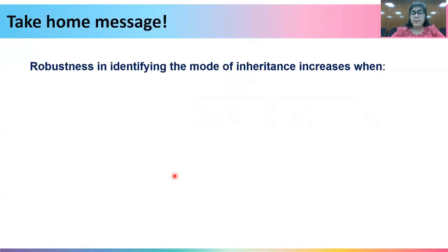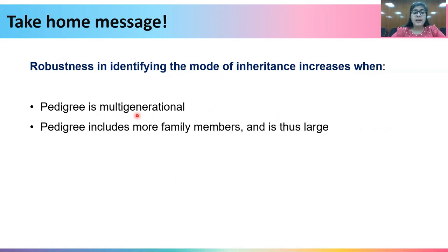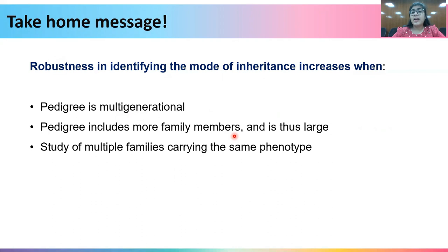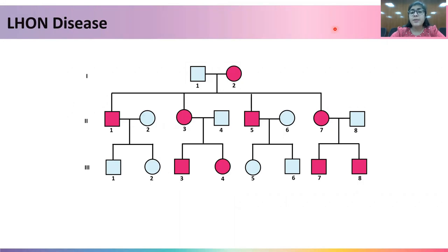The take-home message from these examples is that the robustness in identifying the mode of inheritance increases when the pedigree is multi-generational and includes more family members. When it is not possible to obtain a large or multi-generational pedigree, one can study multiple families carrying the same phenotype and observe the pattern. In the case of novel phenotypes, more evidence — in terms of pedigree members or multiple families — should be collected to conclusively decipher the mode of inheritance.